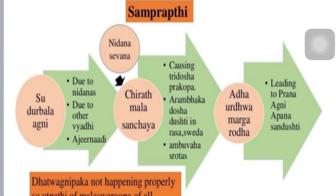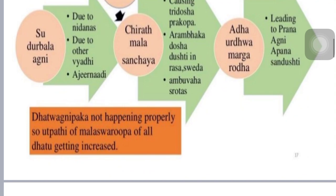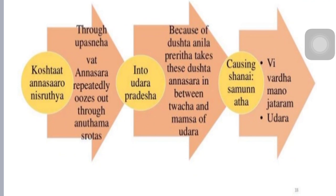Regarding the Samprapti (pathogenesis): whatever etiological factors are present lead to Mandagni. Due to other Vyadhi and Ajirna, digestive capacity becomes impaired, leading to Mal-sanchay. Tridosha Prakopa occurs, and Dosha-dushti takes place. Rasa, Sweda, and Ambuvaha Srotas become vitiated. These Dosha-Dushya together travel via Udavaha Marga, leading to vitiation of Prana, Agni, and Apana Vayu. Due to improper Dhatavagni Paaka, Marga-avarodha and Srota-rodha occur, and ultimately Udhar-roga manifests. Doshas accumulate in Koshtha, vitiating surrounding structures.